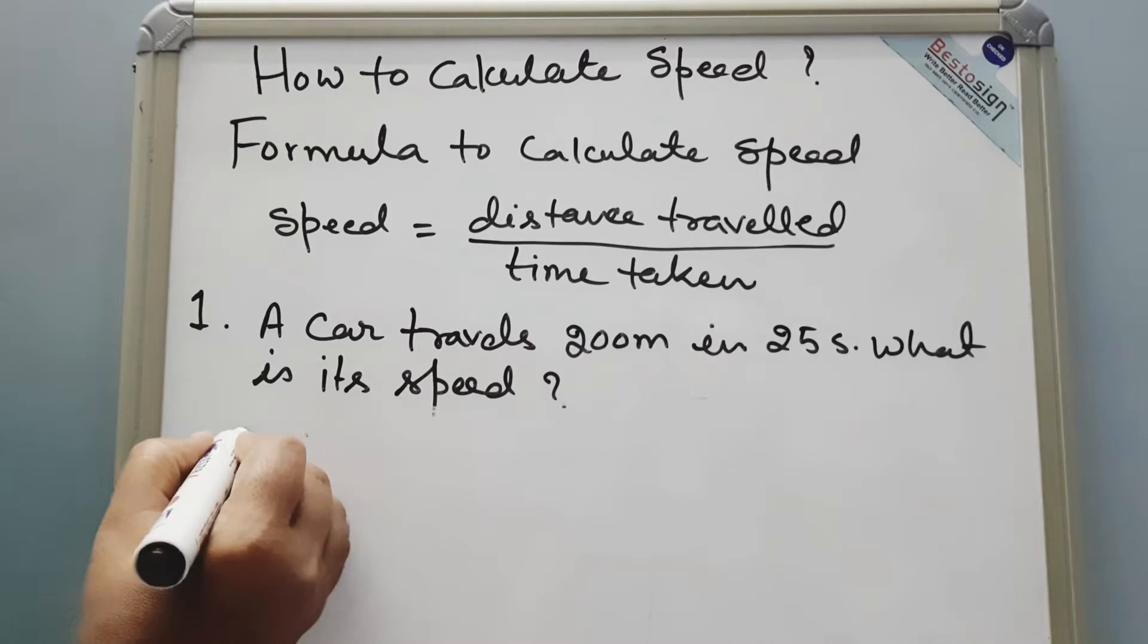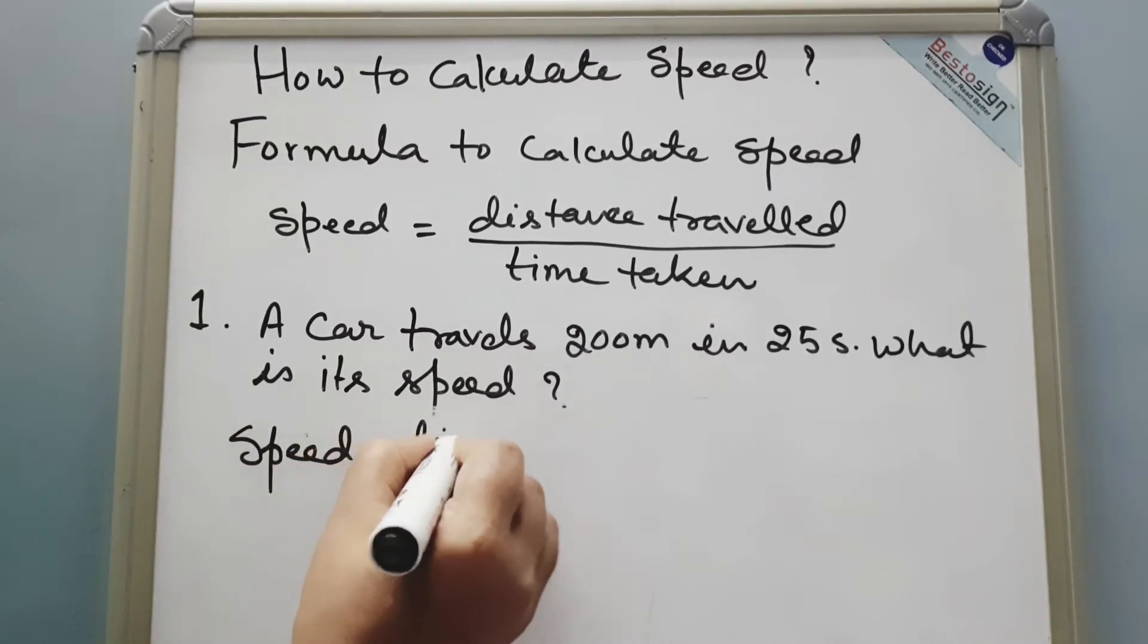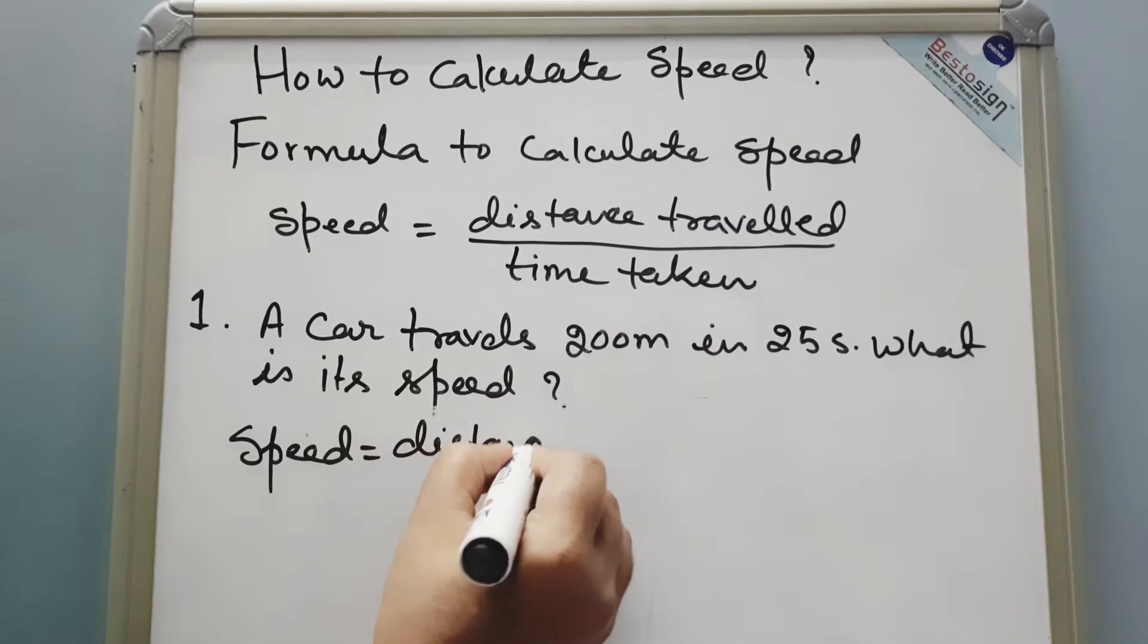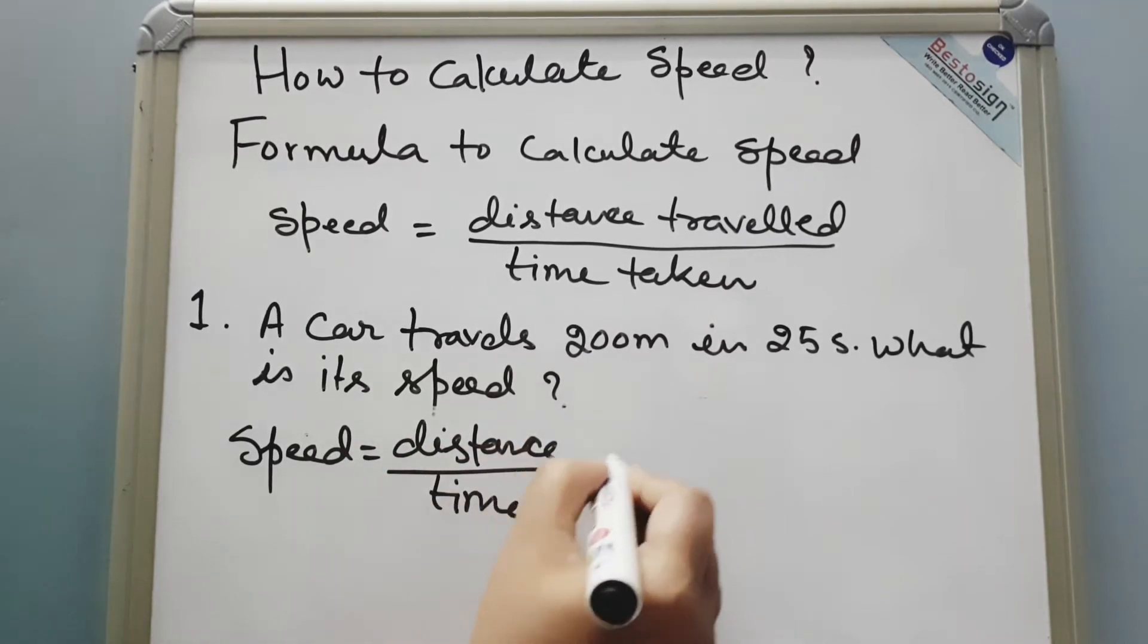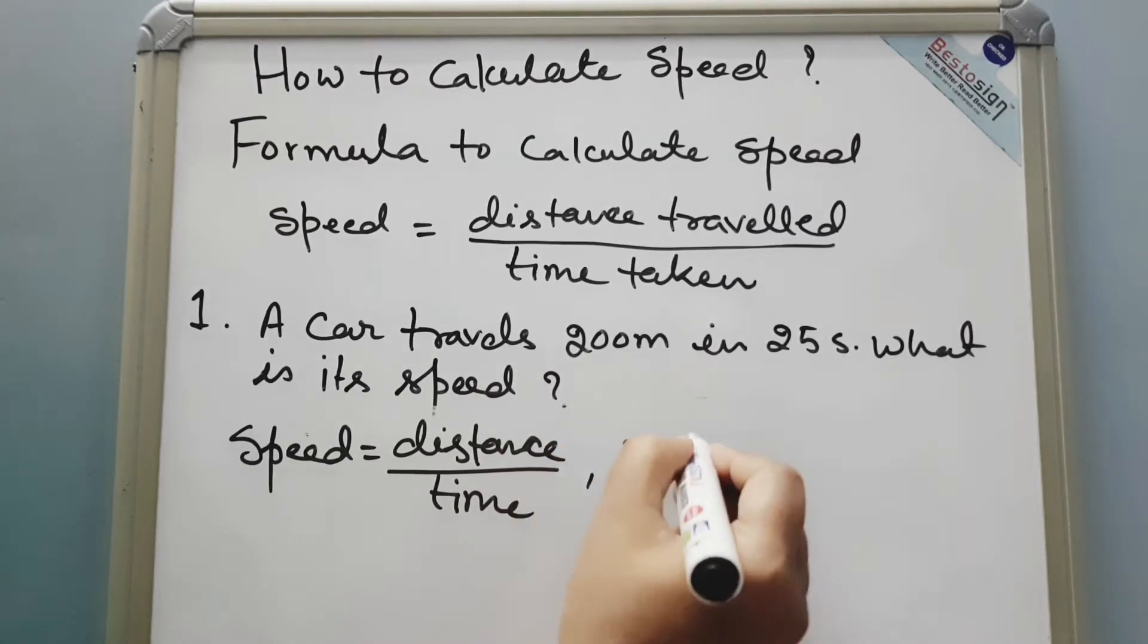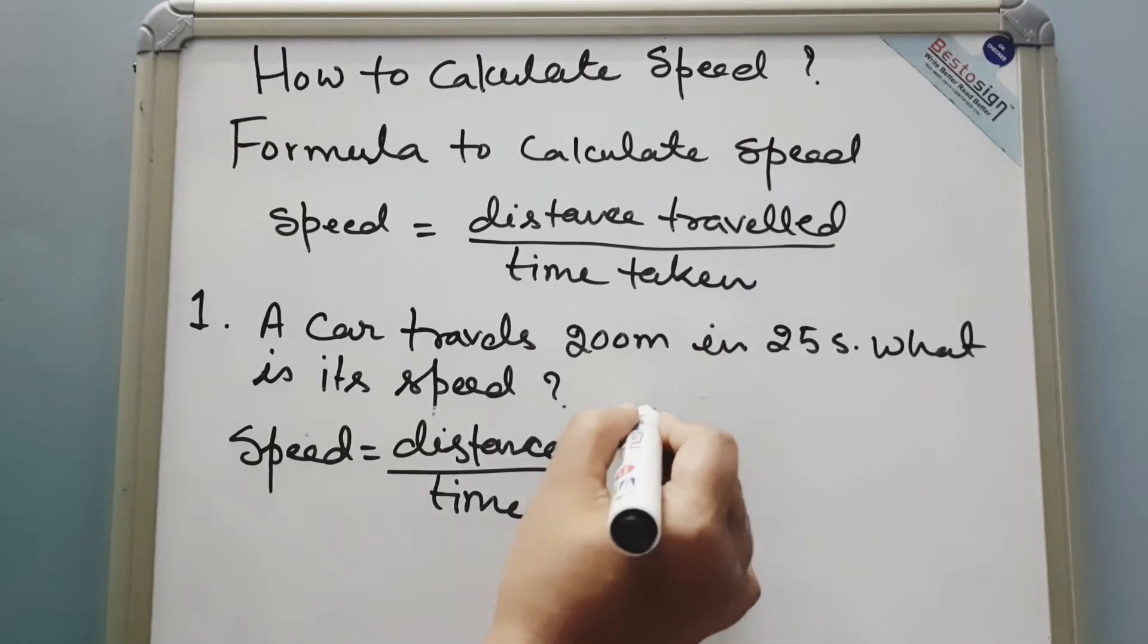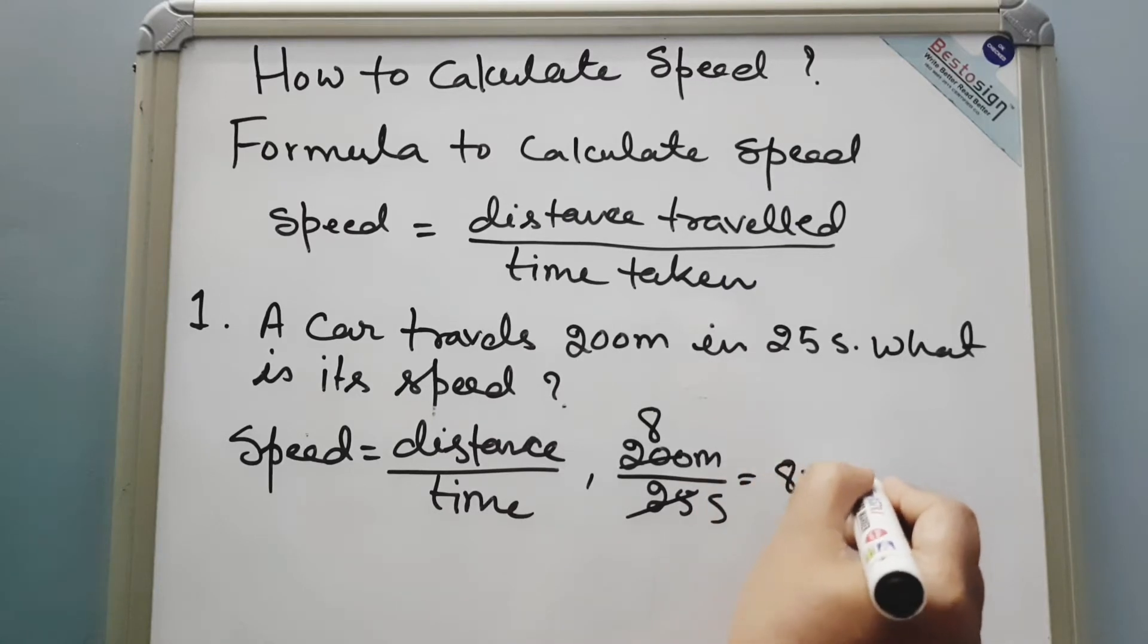So we will write the formula for speed: speed is equal to distance divided by time. Distance given in the question is 200 meters and time taken is 25 seconds. So now it will go 8 times, so the speed of the car is 8 meters per second. Meter per second is the SI unit of speed.